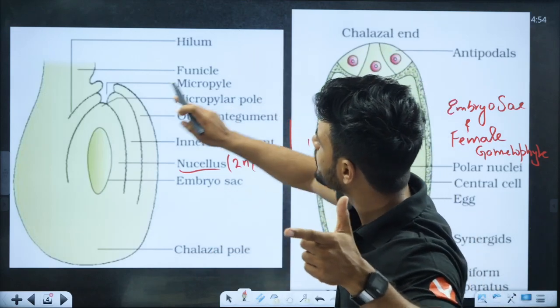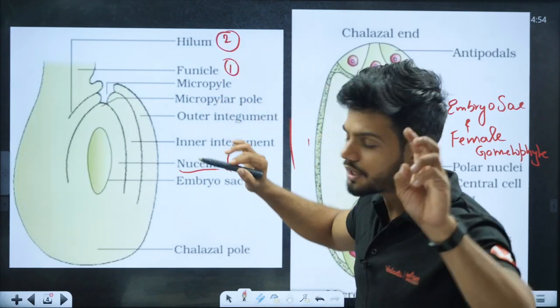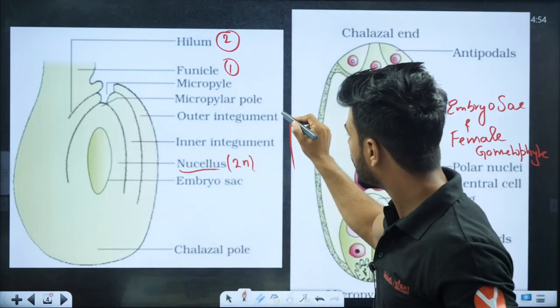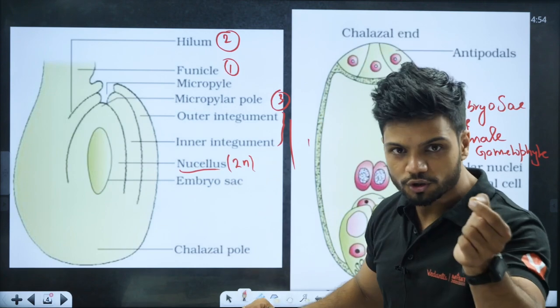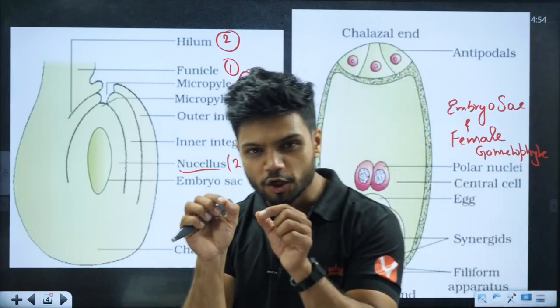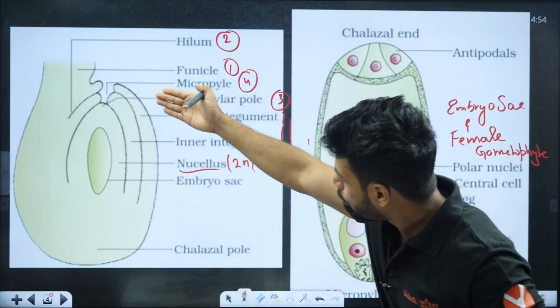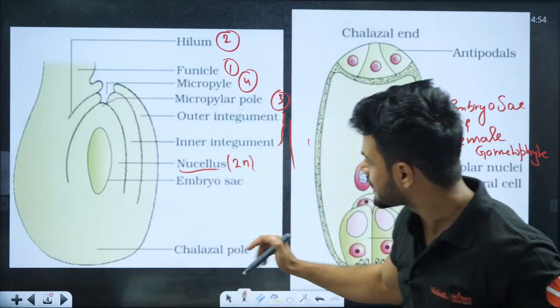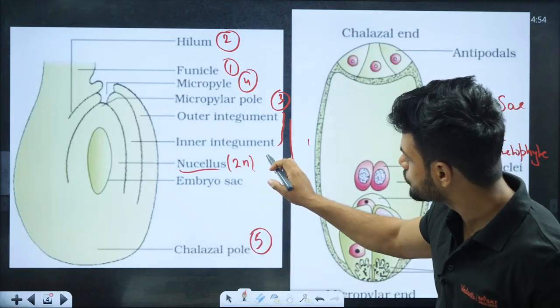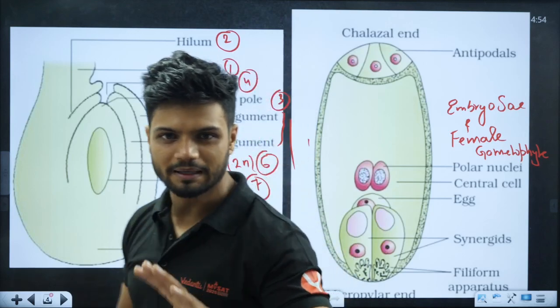For anatropous ovule, there are seven main labelings. First is the stalk called funicle, second is the hilum, third is the integuments - outer and inner integuments. Fourth is the micropylar region where both integuments are not joining. Fifth, opposite to micropyle is chalazal region. Sixth is the nucellus and seventh is the embryo sac.